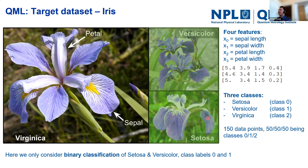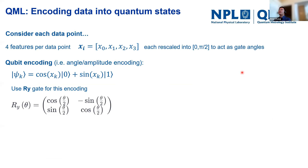We have classical data, so how do we transform it into quantum states? Each data point contains four features — a vector of length four. Each data feature should be rescaled into the range zero to pi over two so they can act as gate angles. We use qubit encoding, also known as angle encoding or amplitude encoding: a cosine(x) acting on the zero state and sine(x) on the one state, implemented using an RY gate.